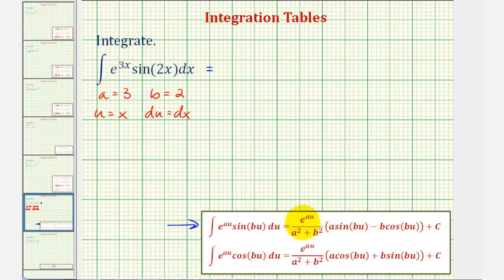We'll have e raised to the power of au, which is e to the 3x, divided by a squared plus b squared, that would be 3 squared plus 2 squared.